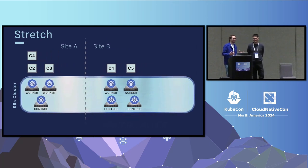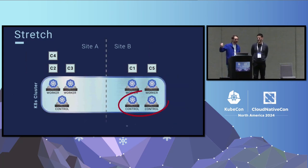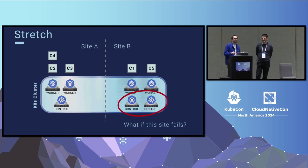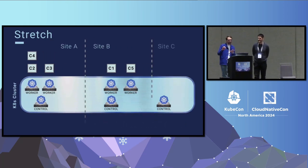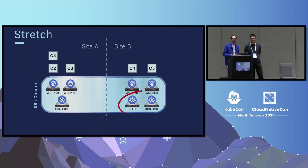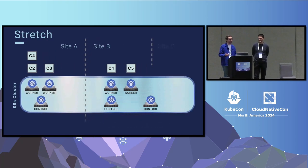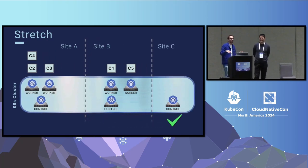Usually two sites is not enough, and you need a third one to avoid split-brain scenarios and network partitioning. You can have a dedicated control plane somewhere else, possibly with slightly higher latency. ETCD is fairly tolerant of high latency according to the docs, but distributions like Red Hat OpenShift recommend keeping all control planes within a fairly low-latency infrastructure.